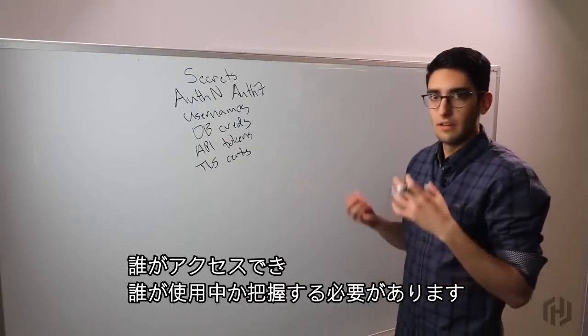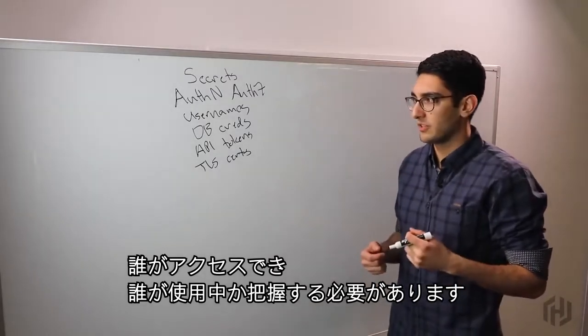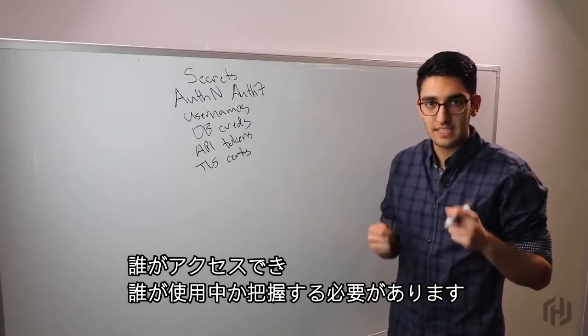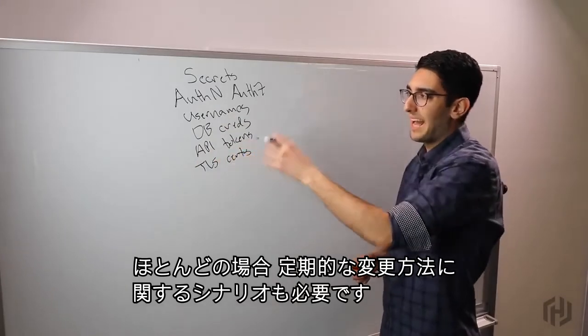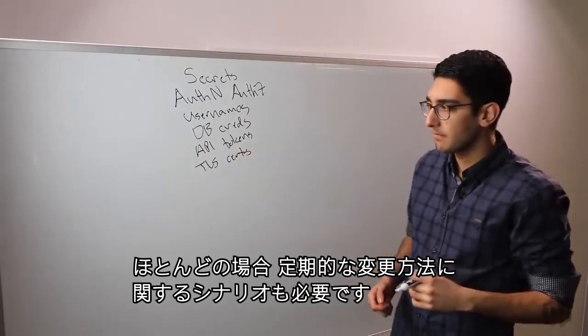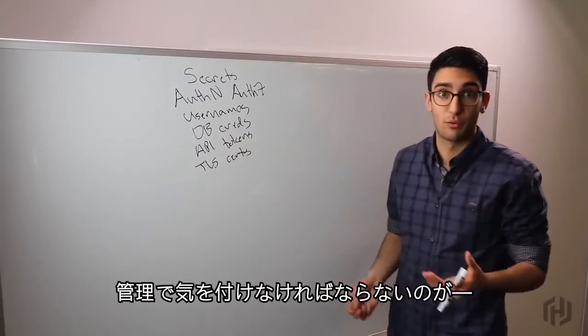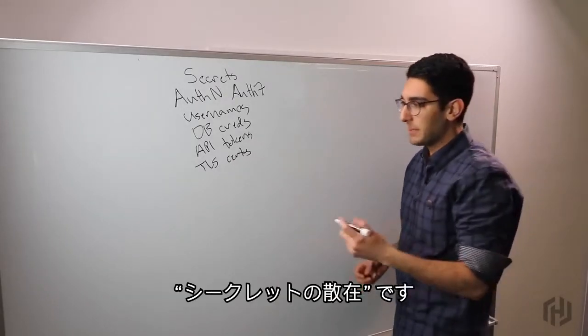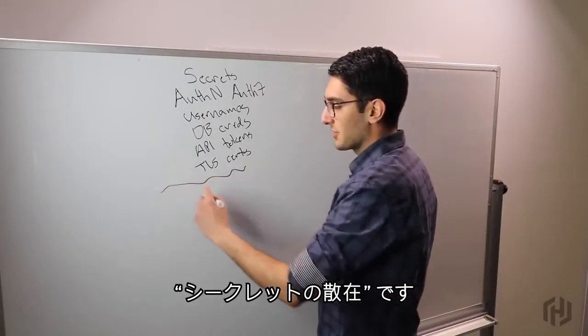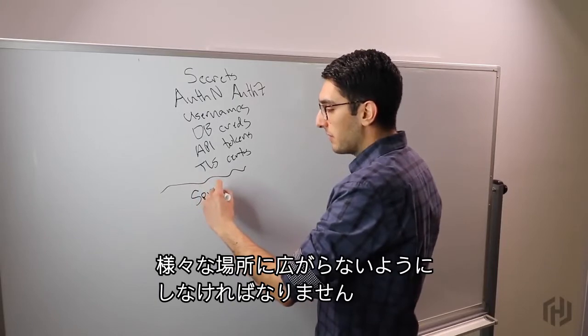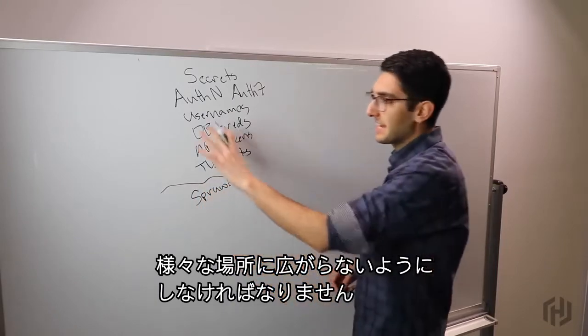We want to understand who has access to them. We want to understand who's been using these things. And in the case of most of these, we want some story around how we can periodically rotate these. When we look at the state of the world of how these things get managed, in practice what we see is secret sprawl.